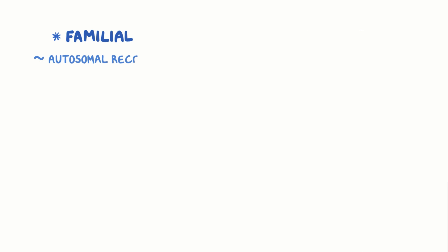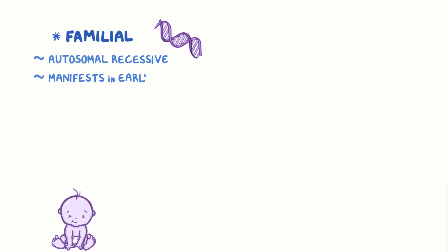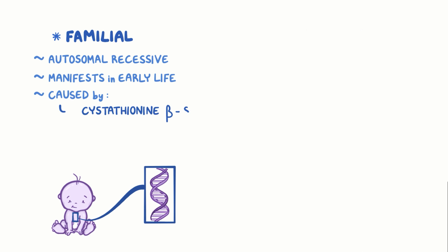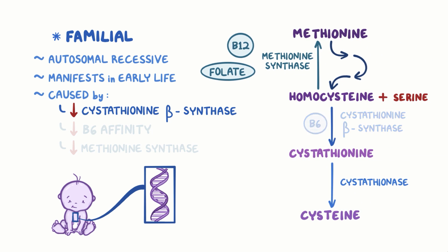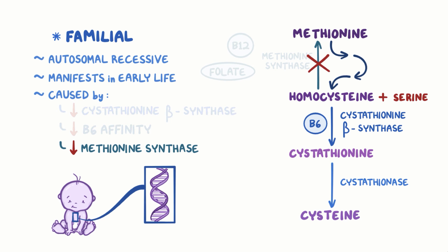There are two types of homocysteinuria: familial and acquired. Familial homocysteinuria is an autosomal recessive genetic disorder that first manifests early in life. It's usually caused by cystathionine beta synthase deficiency, but it can also be caused by decreased B6 affinity in cystathionine beta synthase, or methionine synthase deficiency. When there's a problem with cystathionine beta synthase, homocysteine cannot be combined with serine, so less cysteine is produced and homocysteine builds up. If methionine synthase is defective, homocysteine can be converted into cysteine but can't be converted back into methionine, which also leads to its accumulation.